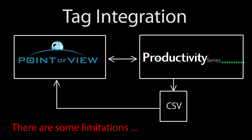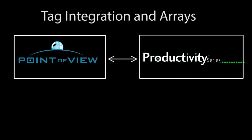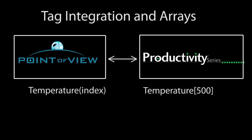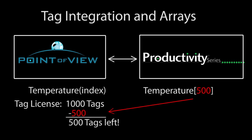There are a couple things you need to be aware of before using tag integration. First, suppose you have an array of 500 elements in your Productivity 2000 project. If POV uses even one element of that array, the entire array goes against your tag count. In this example, you will have just used 500 tags of your license.